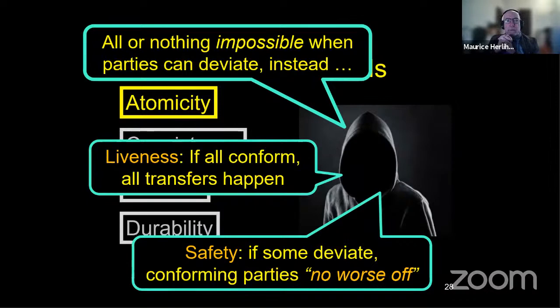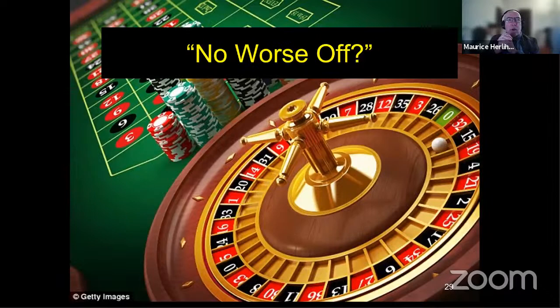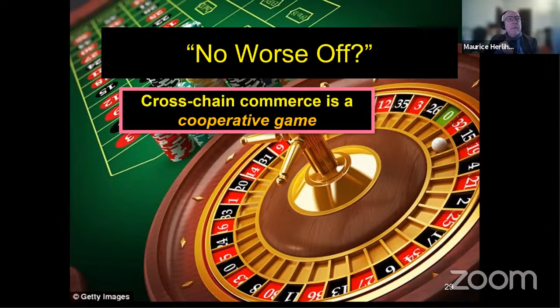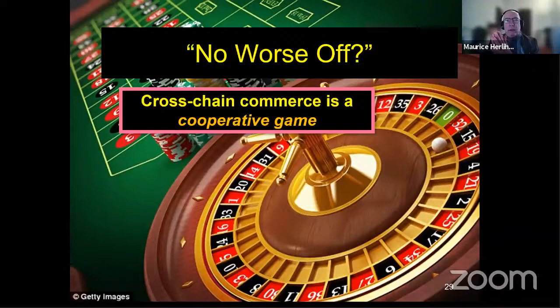And here conforming encompasses having your hardware work and so on. So everything goes well. Then the transfers go through, that's the minimum liveness property you want. And the safety property version of atomicity says, if some parties deviate, then the conforming parties end up no worse off. You might technically conceivably end up better off, but you won't be worse off. Now, of course, you're all looking at that no worse off and saying, hmm, that looks highly suspicious. What does that mean?